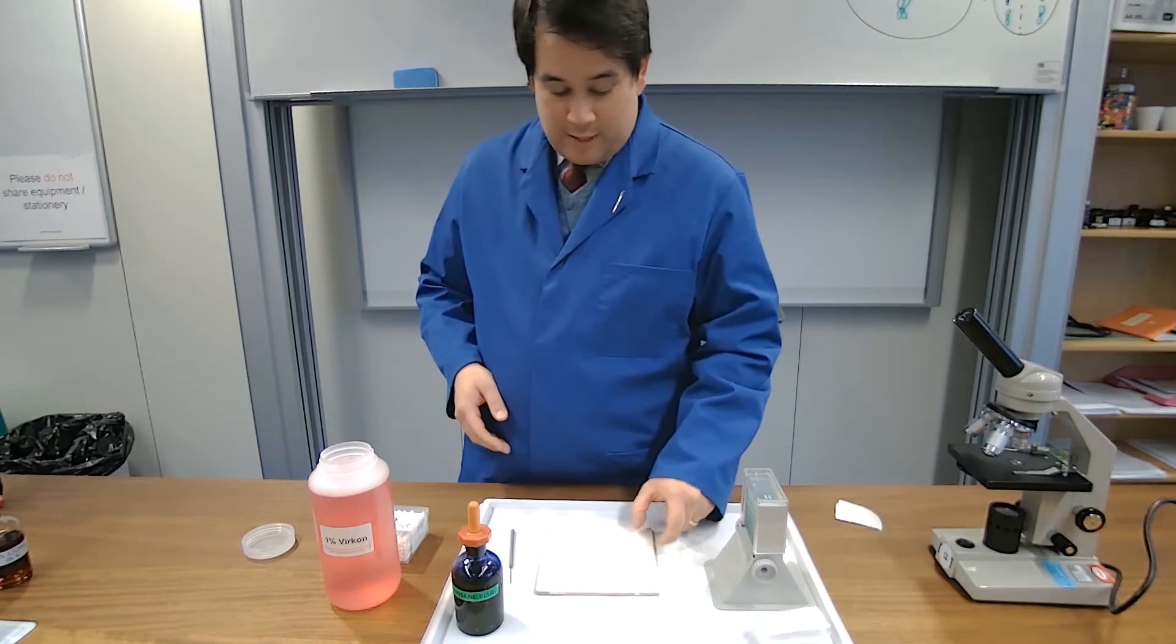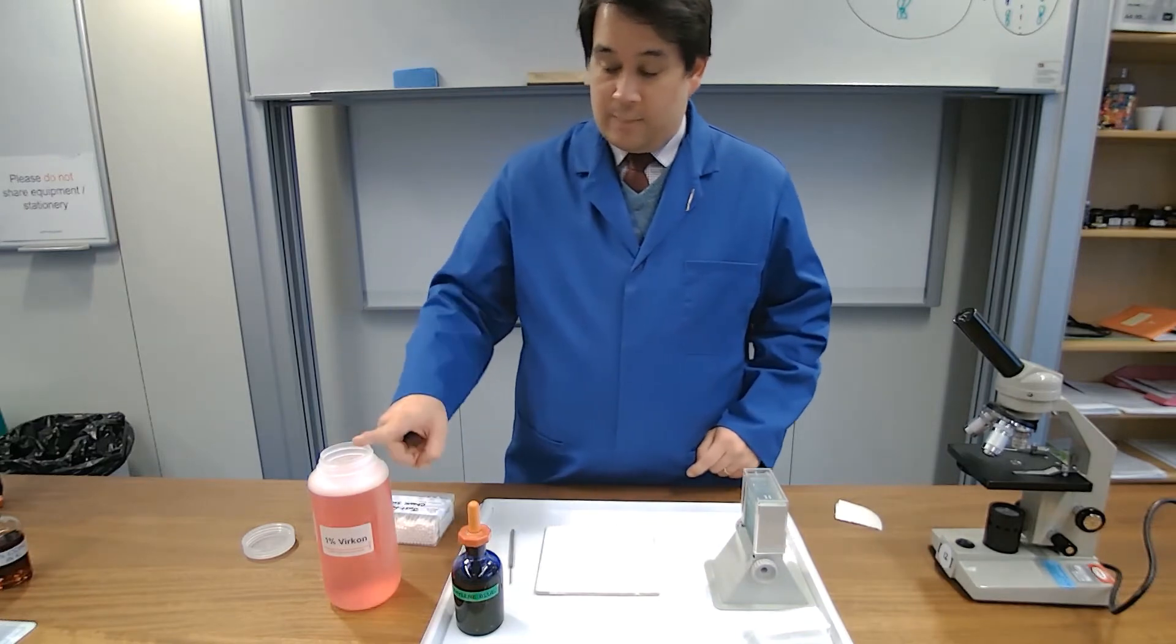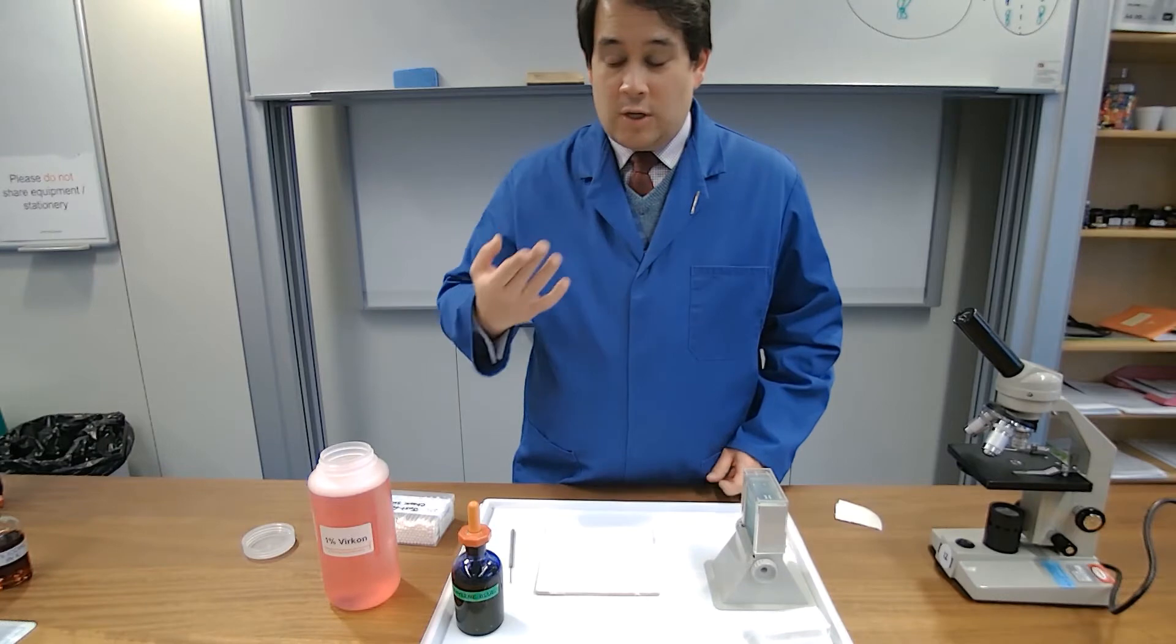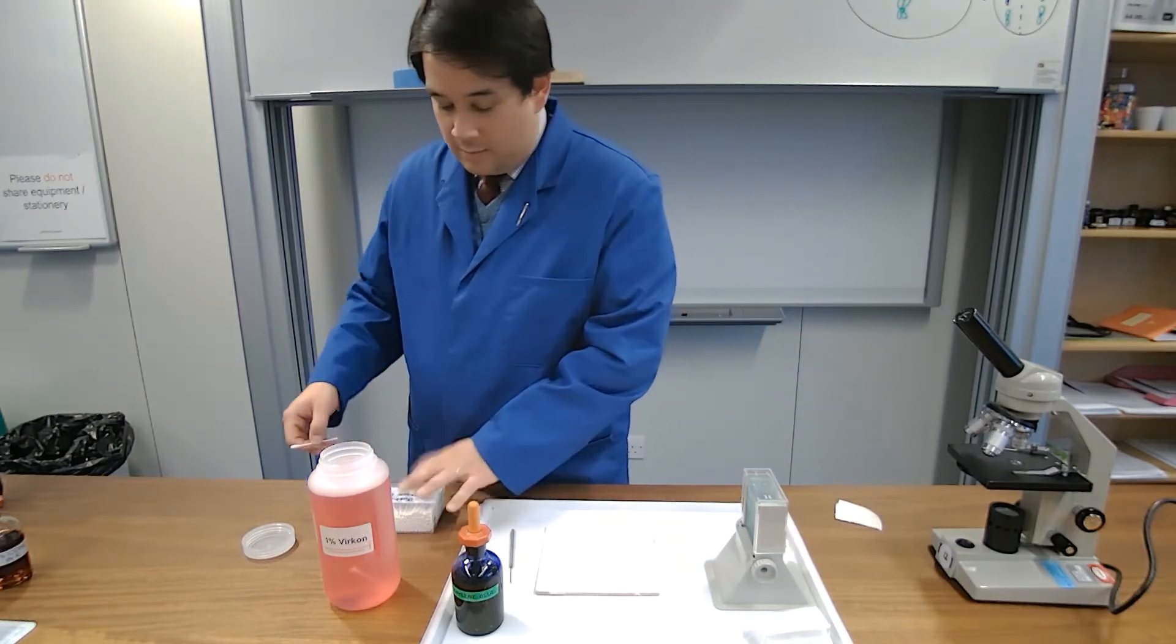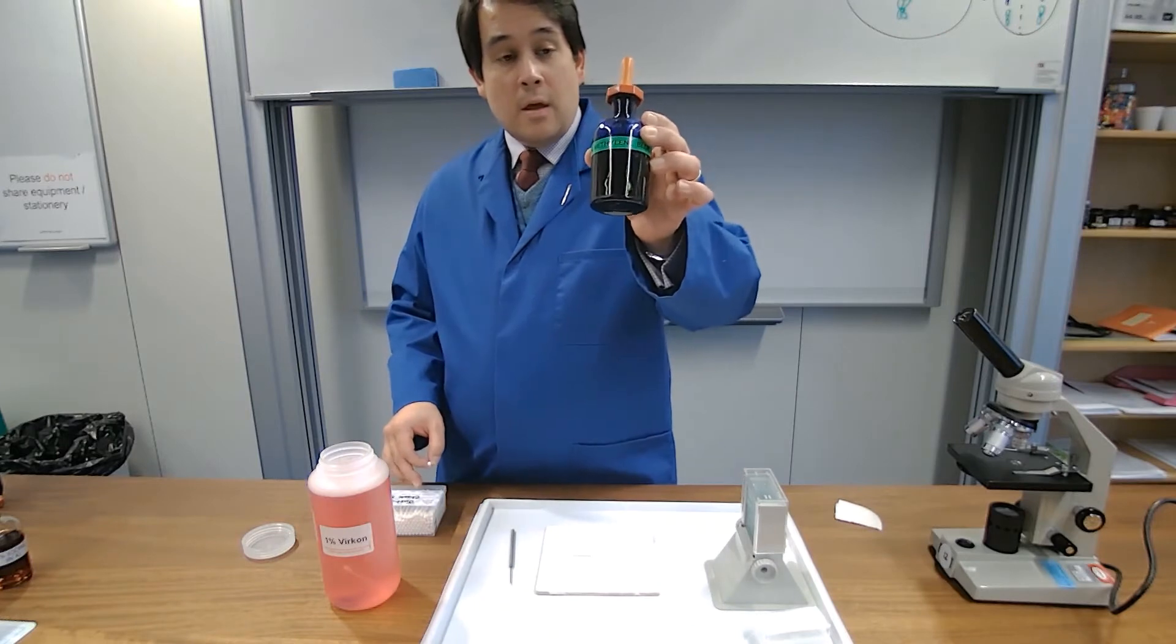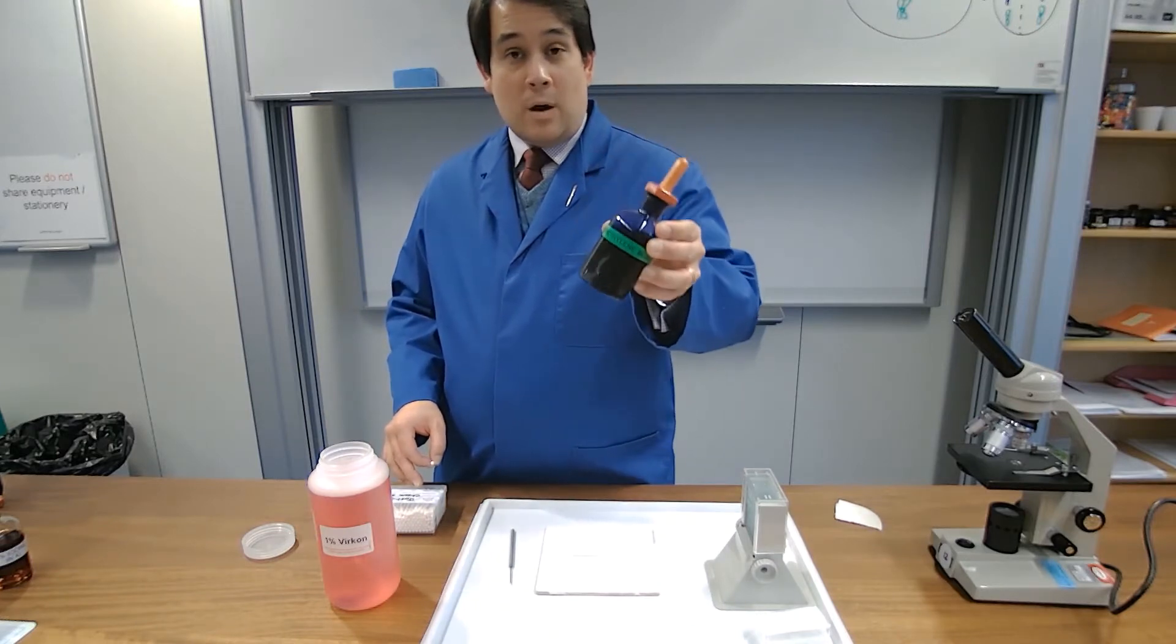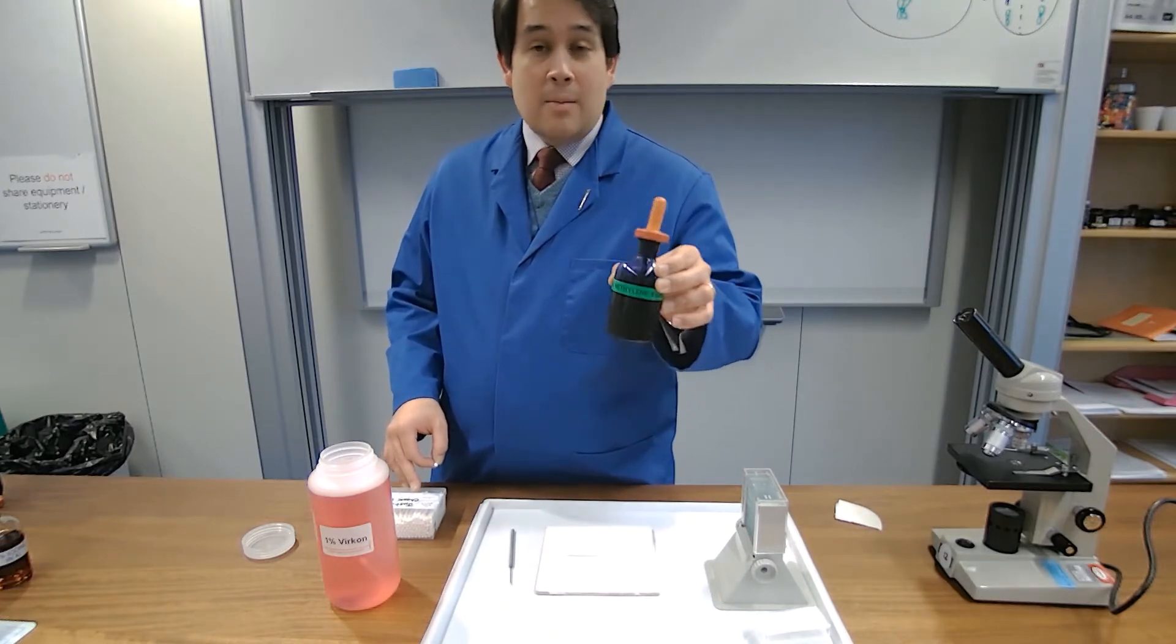So we have a cover slip, we have our slide ready to go, we have some disinfectant because I'm going to be in my cheek cells, and you know, gross, and then after that we have a stain, which we will use to make what are pretty much transparent cells become a bit more visible.